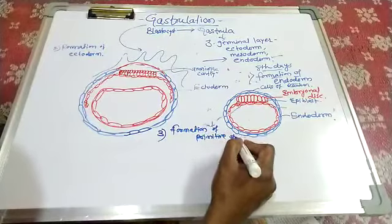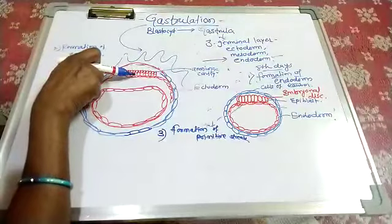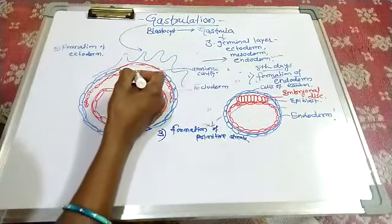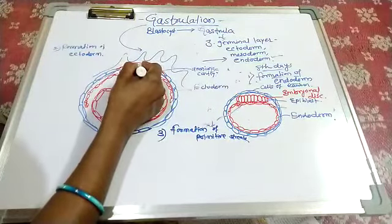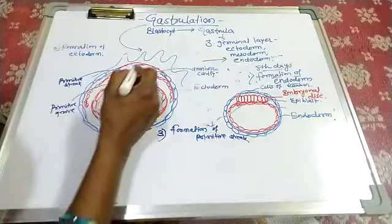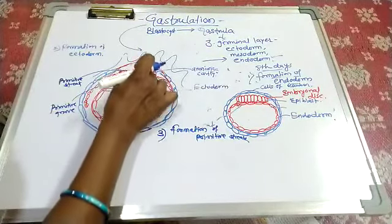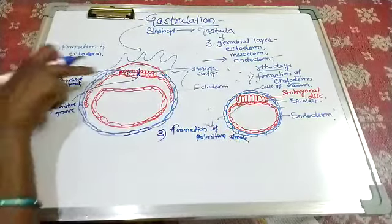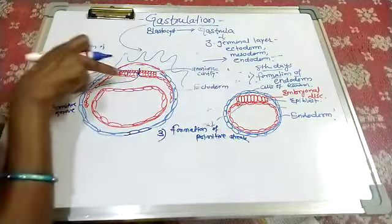The primitive streak begins with epiblast cells. The epiblast cells migrate and get divided, and a fourth layer is also divided in the process.